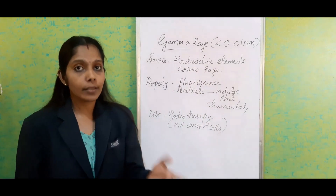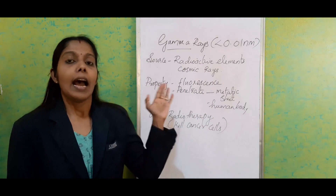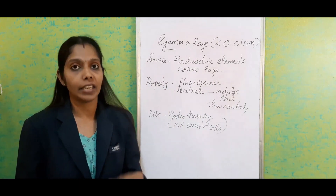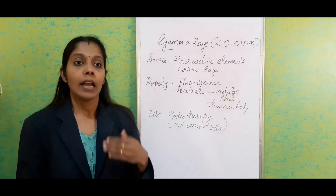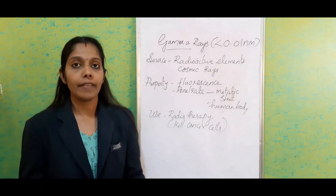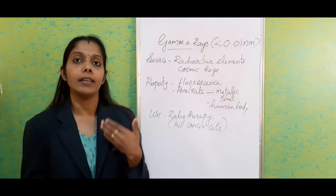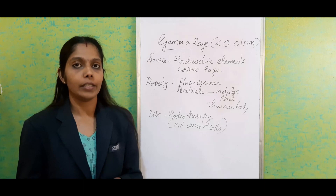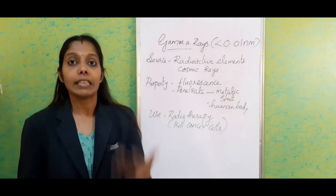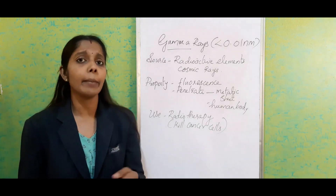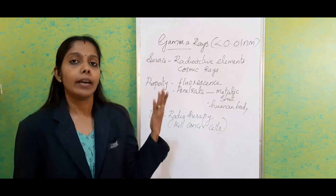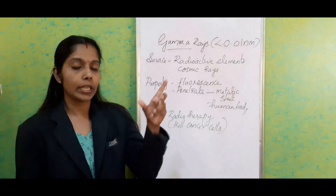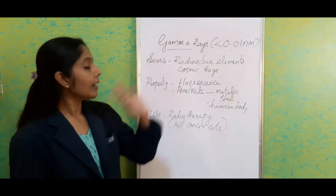What is the source of gamma rays? Gamma rays are produced during the radioactive disintegration of elements. Any element with an atomic number greater than 82 mostly falls under the category of radioactive elements. So during disintegration, it emits energy — gamma rays are one among that. We can also see gamma rays in cosmic rays. So these are the sources of gamma rays.